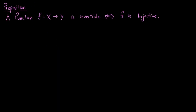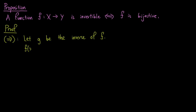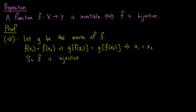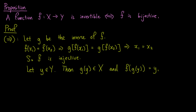We end this video with the following proposition: a function f from X to Y is invertible if and only if f is bijective. Let's first prove the only-if direction. Let g be the inverse of f. Then f of x1 equals f of x2 implies that applying g to both sides gives g of f of x1 equals g of f of x2. Since g ∘ f is the identity function, this implies x1 equals x2, so f is injective. Also, let y be an element of Y. Then g of y is an element in X, and f of g of y equals y. So f is surjective.